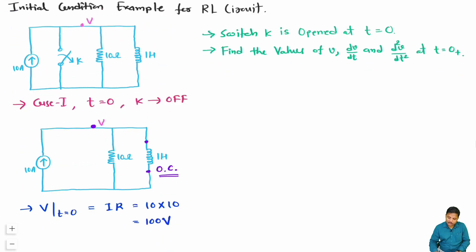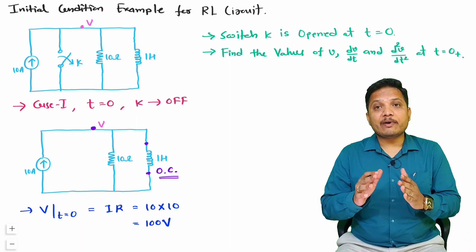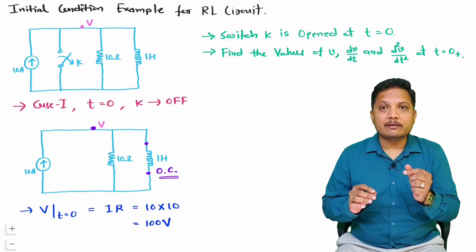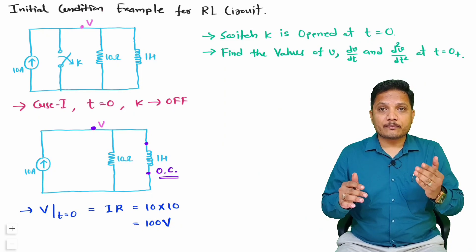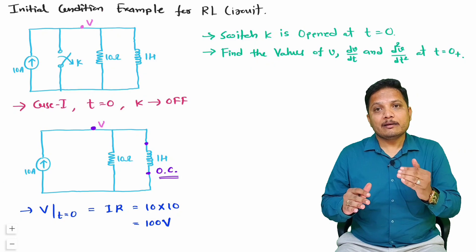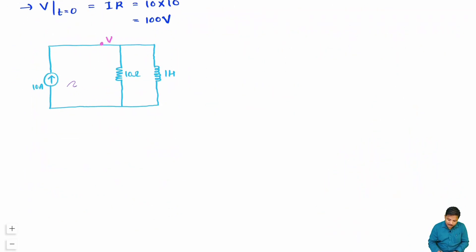Now, since our question requires us to find dV/dt and d²V/dt², we don't just use initial conditions — we need to form an equation using nodal analysis. So I will redraw this circuit and apply nodal analysis. We have this current source and here we have a node. At this node, let us say current entering is I1, through another branch current is I2, and through the inductor branch current is I3.